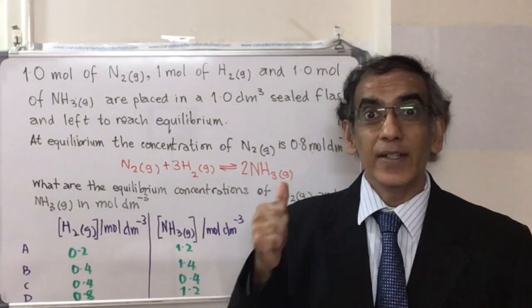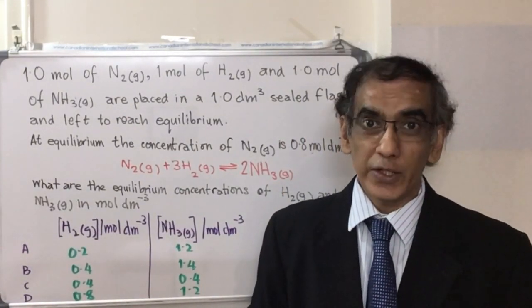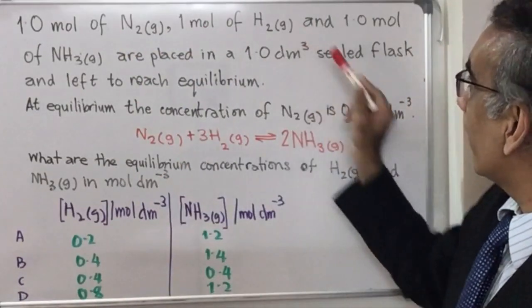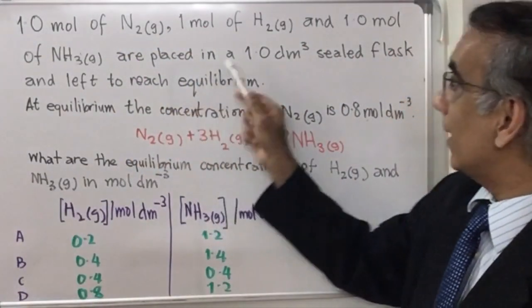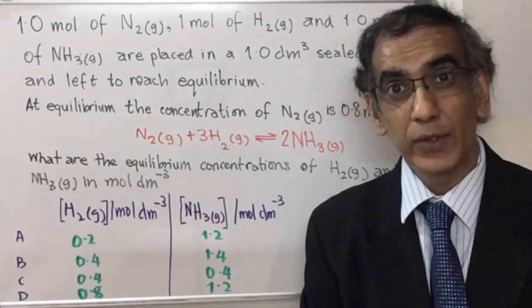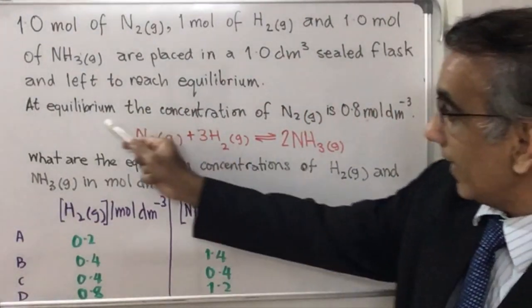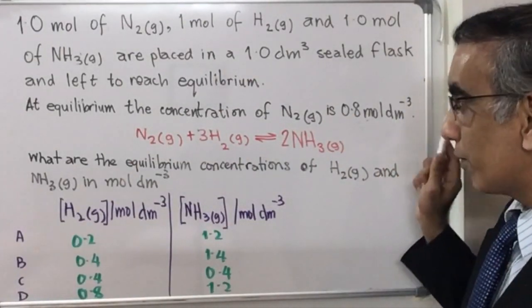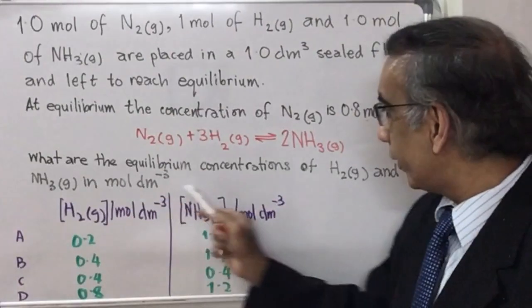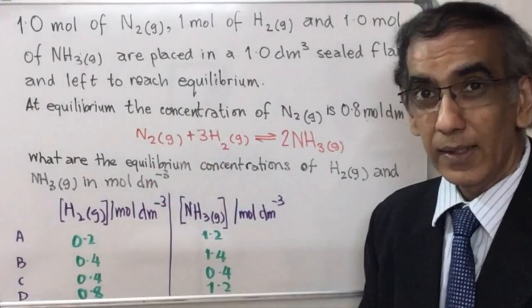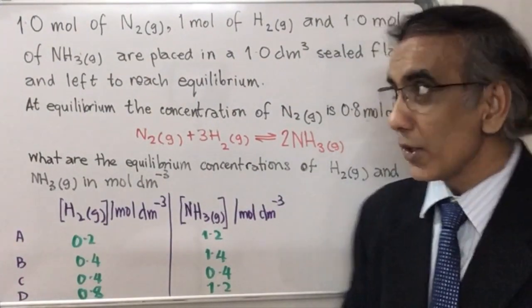Hello and welcome again as we consider yet another multiple-choice question for IB chemistry. One mole of nitrogen, one mole of hydrogen, and one mole of ammonia are placed in a 1-DM-cube sealed flask and left to reach equilibrium. At equilibrium, the concentration of nitrogen is 0.8 moles per DM-cube. What are the equilibrium concentrations of hydrogen and ammonia in moles per DM-cube?